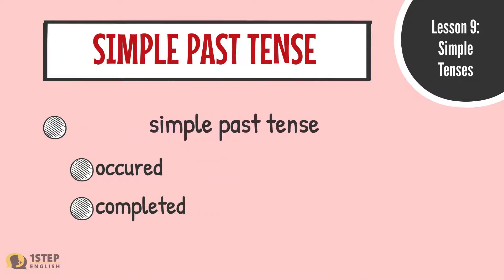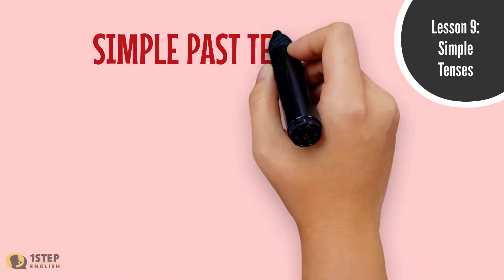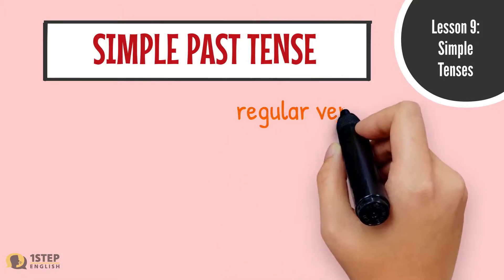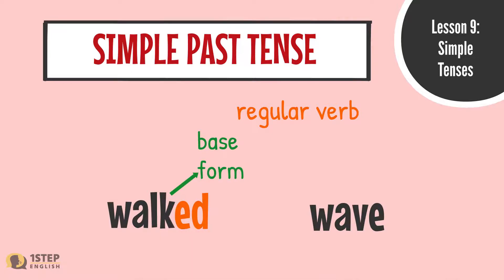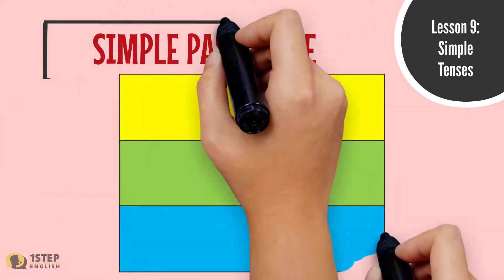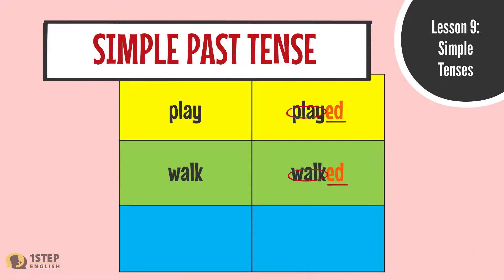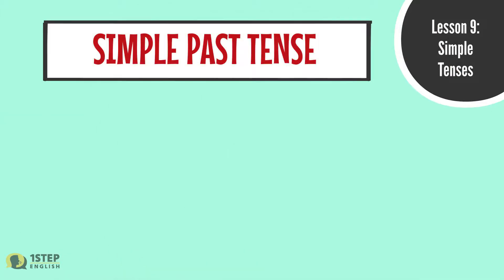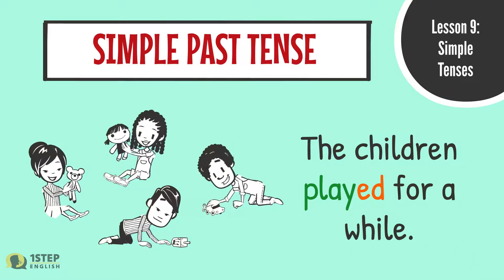The simple past tense shows an action that occurred and was completed at a particular time in the past. For the simple past tense of regular verbs like 'walk' and 'wave,' add -ed to the root form of the verb, or add -d if the root form already ends in an -e. For example: play → played, walk → walked, love → loved. 'The children played for a while' — we simply add -ed to 'play' to get the past tense 'played.'